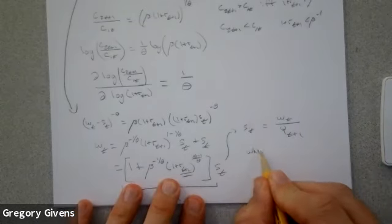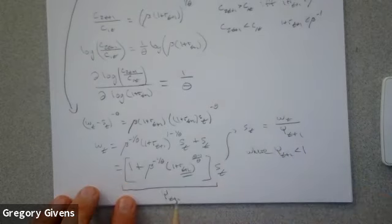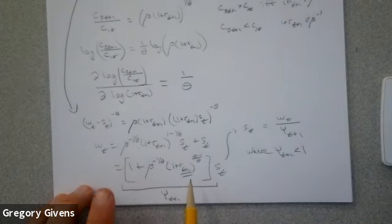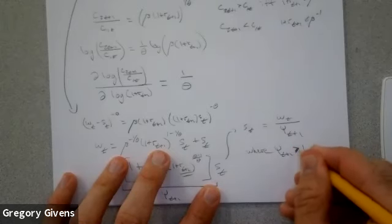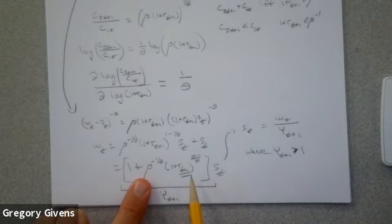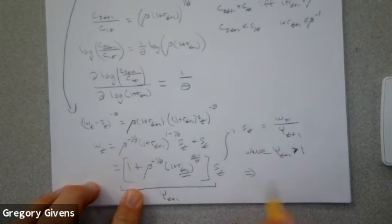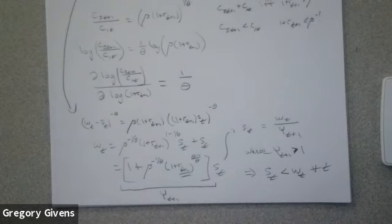Psi_{T+1} is one plus this positive term, so psi is bigger than one. Since psi is bigger than one, S_T has to be less than W_T — which makes sense: we're saving a fraction of our wage every period. That fraction can change over time, but it has to be less than the wage.